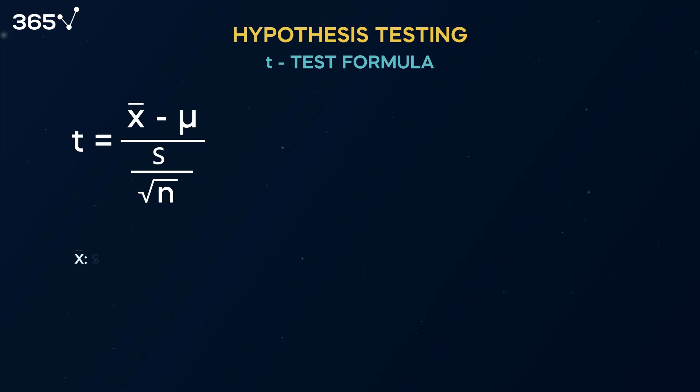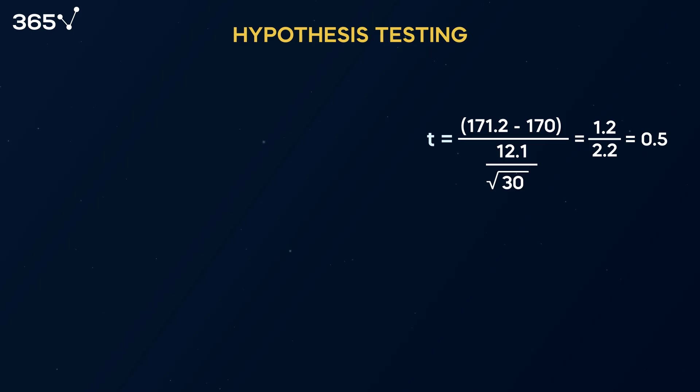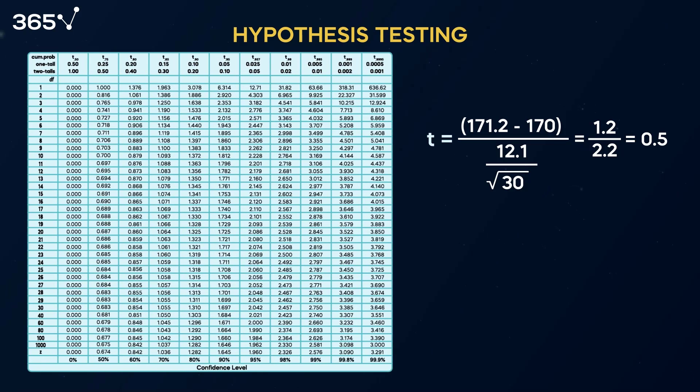Note the formula we need to use. Looks familiar to what we had before, doesn't it? This time, we solve for t by subtracting 170 from the sample mean, and dividing by the standard deviation, divided by the square root of the number of observations. We obtain the t-statistic, which is equal to 0.5. The next stop is to compare the t-statistic with a value from the t-distribution table, determined based on a pre-selected 95% confidence level, remembering that we have 31 minus 1 equal to 30 observations.